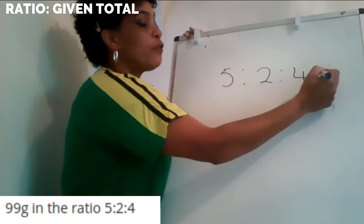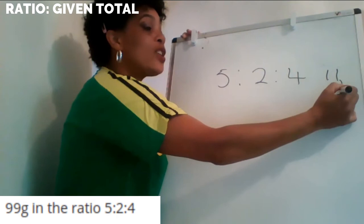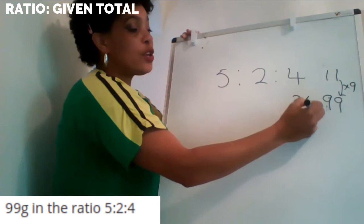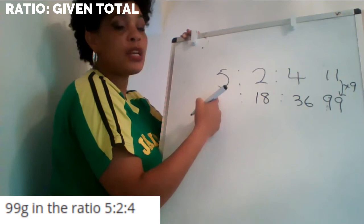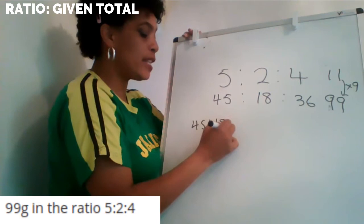I'm sharing 99 into 11 parts. What do I do from 11 to get to 99? Times it by nine. So four times nine is 36, two times nine is 18, and five times nine is 45. If you add all of that together you get 99. So my answer is 45 to 18 to 36.